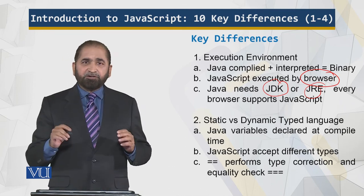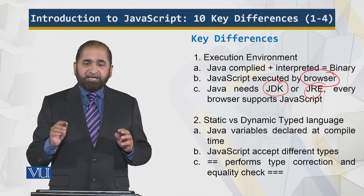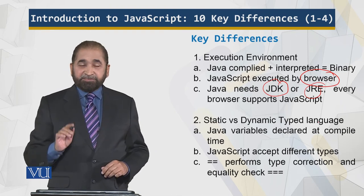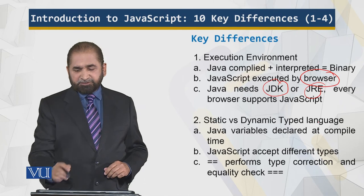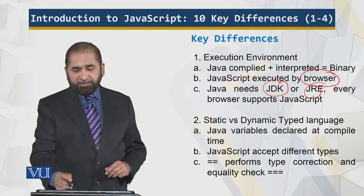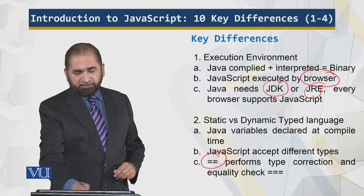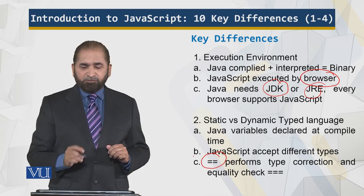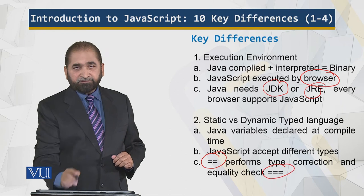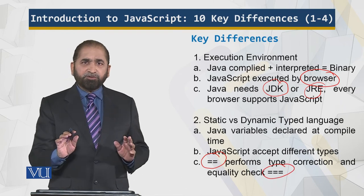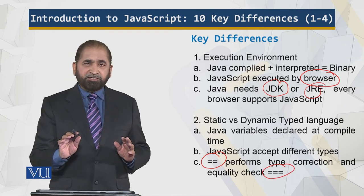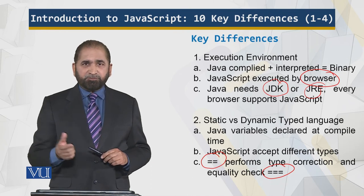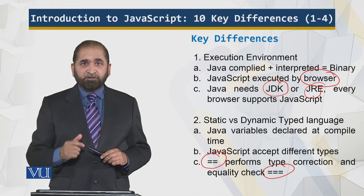Static versus dynamic type language: in Java, when you declare a variable, the type is fixed at compile time and stays the same. That is not the case in JavaScript. JavaScript accepts different types for variables, and when an operation is performed, it corrects the type dynamically. There are also differences in equality checks, but I won't go into full details now — we'll look into more in subsequent modules.